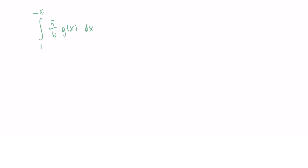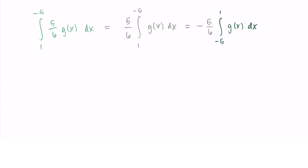For the second problem, we look at the integral from 1 to negative 5 of five-sixths g of x dx. First, I factor out the constant five-sixths. Then I notice the bounds are in the opposite order from what we were given — I want to swap from 1 to negative 5 into negative 5 to 1, which means adding a negative on the outside. Now I have negative five-sixths times the integral from negative 5 to 1 of g, which equals negative 3. So my answer is negative five-sixths times negative 3, which is 15 over 6, or five-halves.